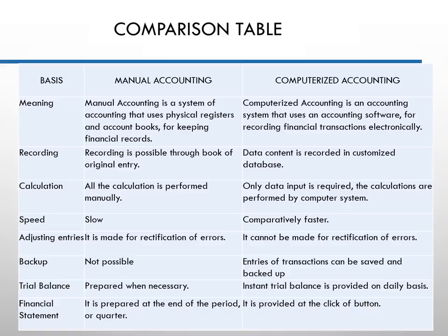Looking at the comparison table: in a manual accounting system the trial balance is prepared only when necessary, but with a computerized system you can instantly retrieve the trial balance whenever you want. Similarly, financial statements are typically prepared at certain periods such as quarterly or year-end in manual systems, but with a computerized accounting system you can retrieve financial statements monthly, with some adjustments needed.